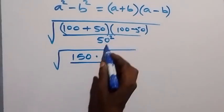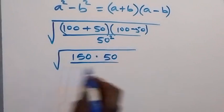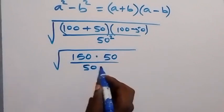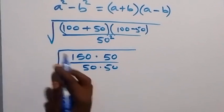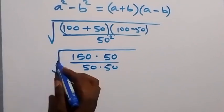This is divided by 50², which we can write as 50 times 50. The square root covers everything.